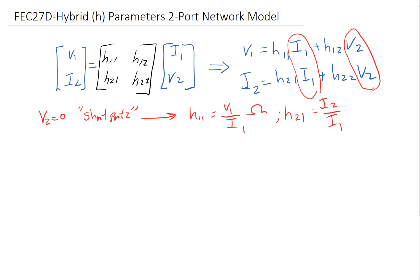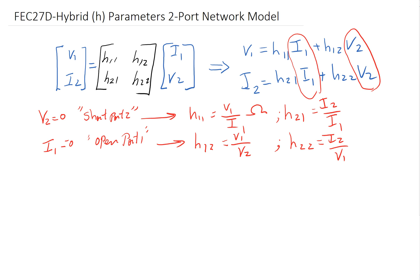For the second condition, we set I1 equal to 0, meaning we open port 1. This allows us to find H12 equal to V1 over V2, which is unitless. Then H22 equals I2 over V2, which has units of Siemens or Mhos. Unlike Z and Y parameters where every parameter had the same units, H parameters each have different units — it is important to keep those units straight.